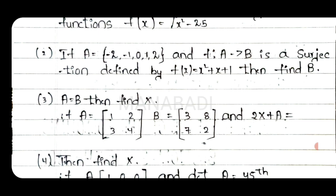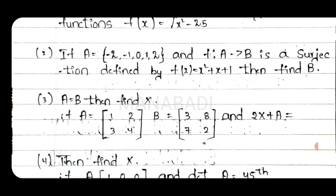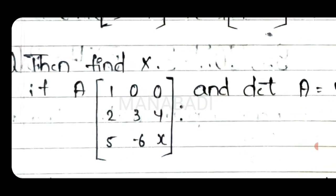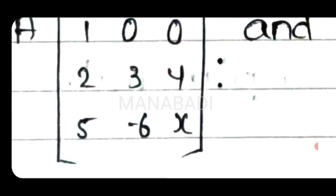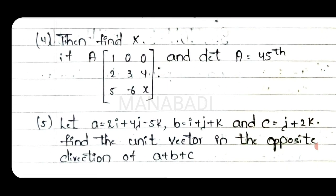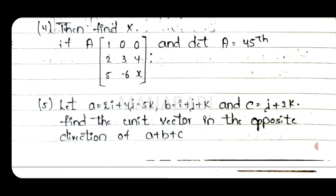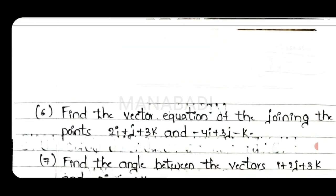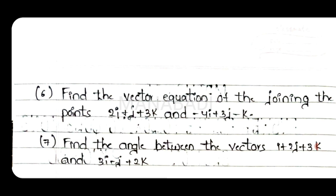Third question: If A matrix and B matrix, and 2x plus A equals 2 — this is the third question. Fourth question. Fifth question. Sixth question: Find the vector equation of the line joining the points 2i plus j plus 3k and minus 4i plus 3j minus k.